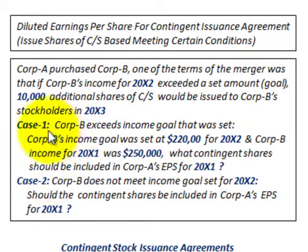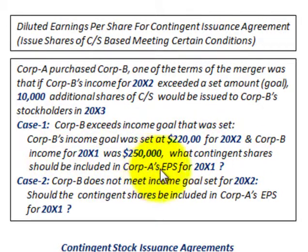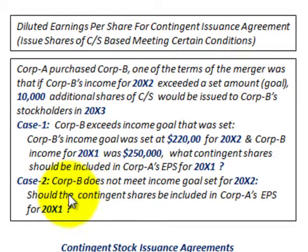We're going to look at two cases. Case 1 is where Corp B exceeds the income goal that was set — Corp B's income goal was set at $220,000 for year 20x2, and Corp B's income for year 20x1 was $250,000. The question is: what contingent shares should be included in Corporation A's earnings per share for year 20x1? Case 2 is where Corp B does not meet the income goal set for 20x2.